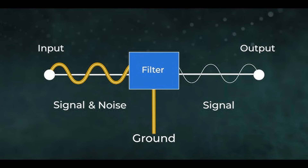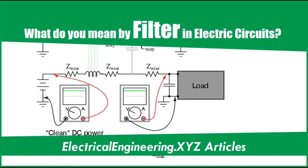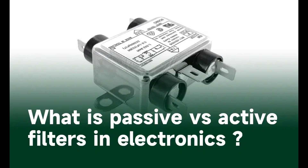4. Band-Stop Filter — attenuates a specific range of frequencies while allowing frequencies outside that range to pass. The notch filter is a specific type of band-stop filter that removes a narrow range of frequencies, like hum from electrical interference. Applications include eliminating unwanted frequencies like 60Hz power line noise in audio systems or filtering out interfering frequencies in signal processing. 5. All-Pass Filter — allows all frequencies to pass but alters the phase relationship between frequencies. Applications include phase-shifting, audio processing for 3D sound effects, and control systems.